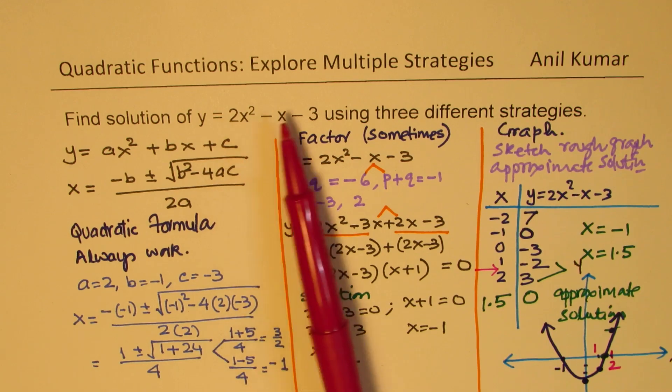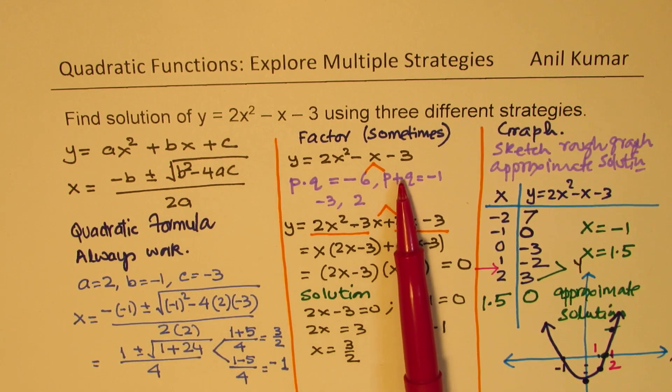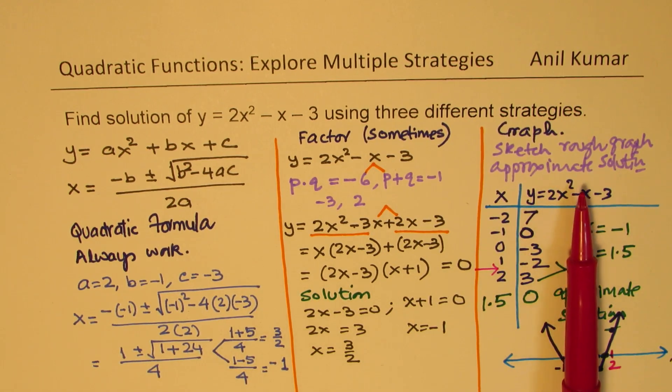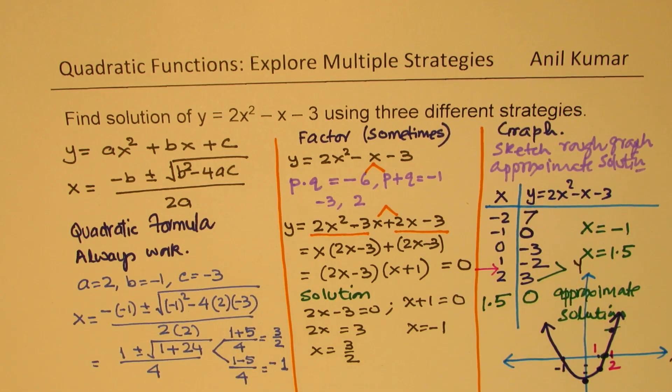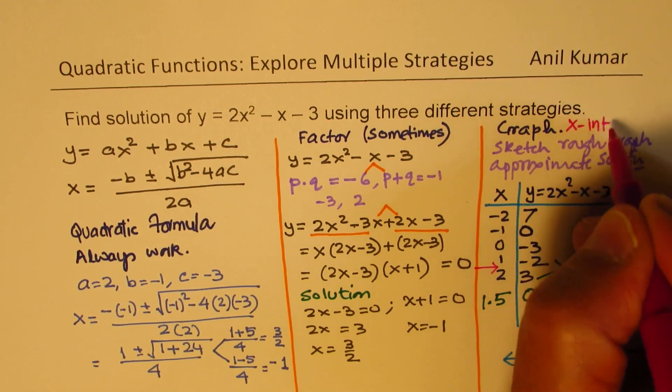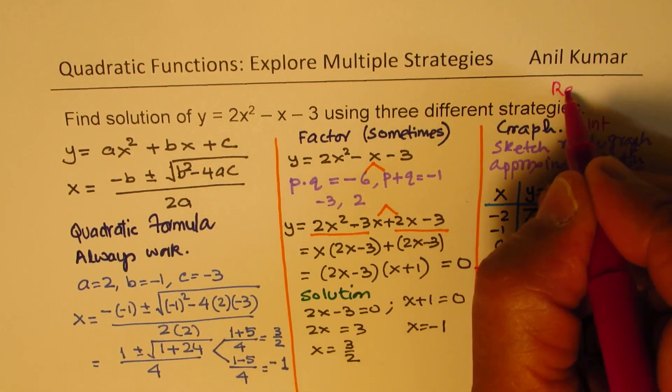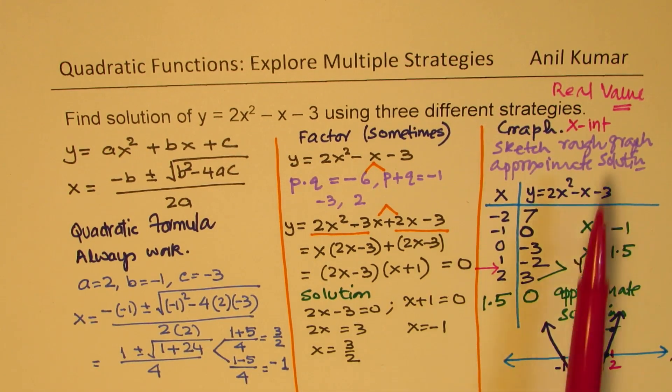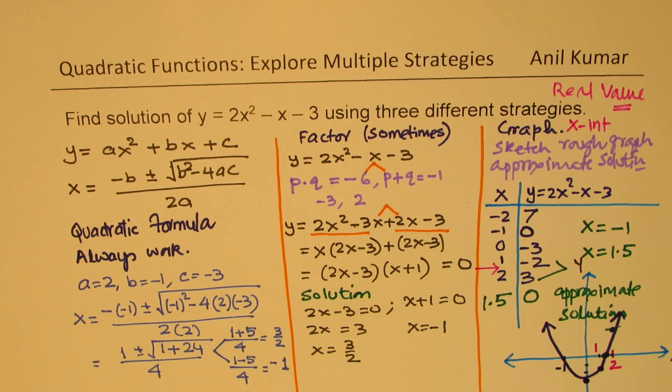Now some of these equations can be factored and then we have integer values or sometimes simple values as our solution, as we have seen here. Graph will always provide you with a solution if you have a real solution. So graph x-intercepts provide real solution. Perfect. So that is kind of important to understand. However, these are three very popular techniques of finding solution to our quadratic functions.